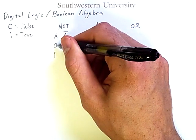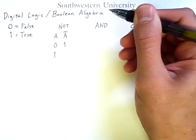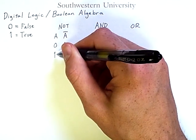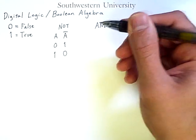If A is zero, then the negation of A is one. And if A is one, then the negation of A is zero. It is simply the opposite.